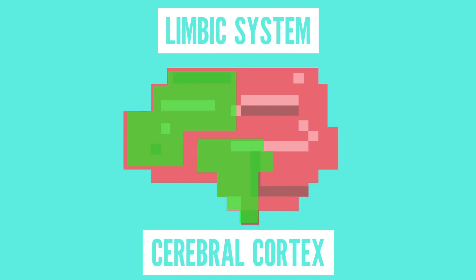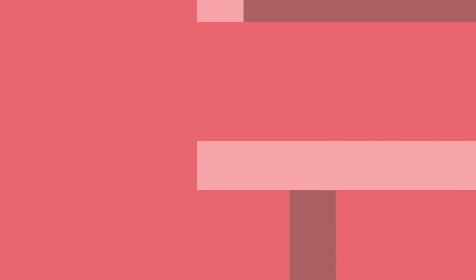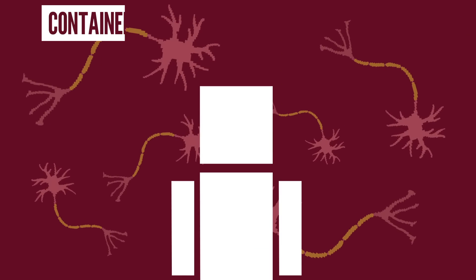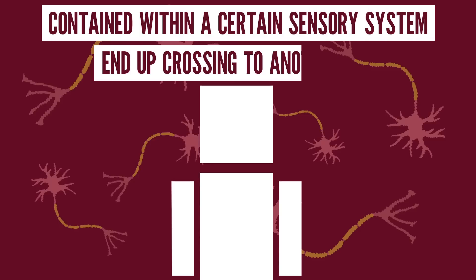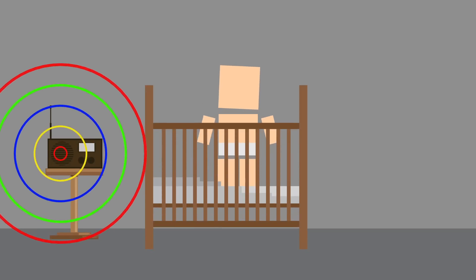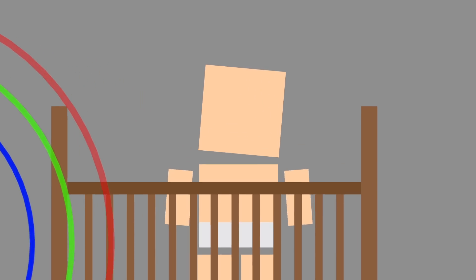Some scientists also believe that synesthesia comes from a crossed wiring in the brain, where neurons and synapses that are typically contained within a certain sensory system end up crossing to another one. In this theory, it's even thought by some that everyone has crossed connections at birth, but they're later pruned out.